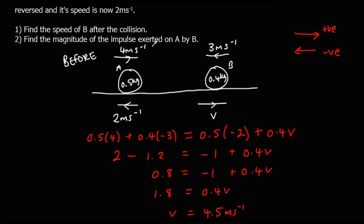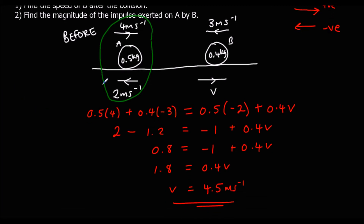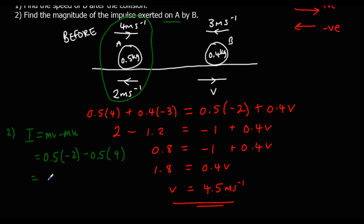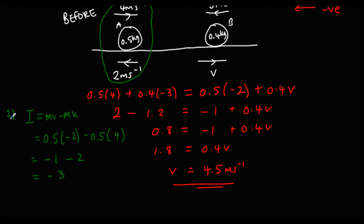Find the magnitude of the impulse exerted on A by B. Looking at the impulse on A — impulse is Mv minus Mu, the change in momentum. That's 0.5 times negative 2, minus 0.5 times 4, which is negative 1 minus 2, giving negative 3. We only care about the magnitude, so the answer is 3 newton seconds.